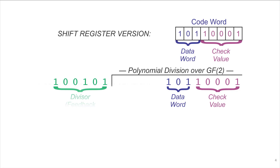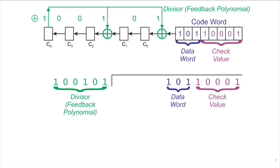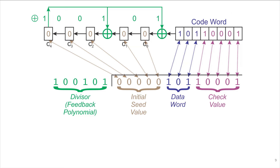To set up the long division, we take the divisor, which is the feedback polynomial. For the hardware, we use a feedback shift register with the same polynomial — 0 positions do nothing, and 1 positions involve feedback through an XOR gate. The bits in the feedback polynomial in the hardware exactly correspond to the divisor. We initialize the feedback shift register with all zeros as the seed value, and prepend this seed value to the rest of the code word for the long division algorithm to work out properly.